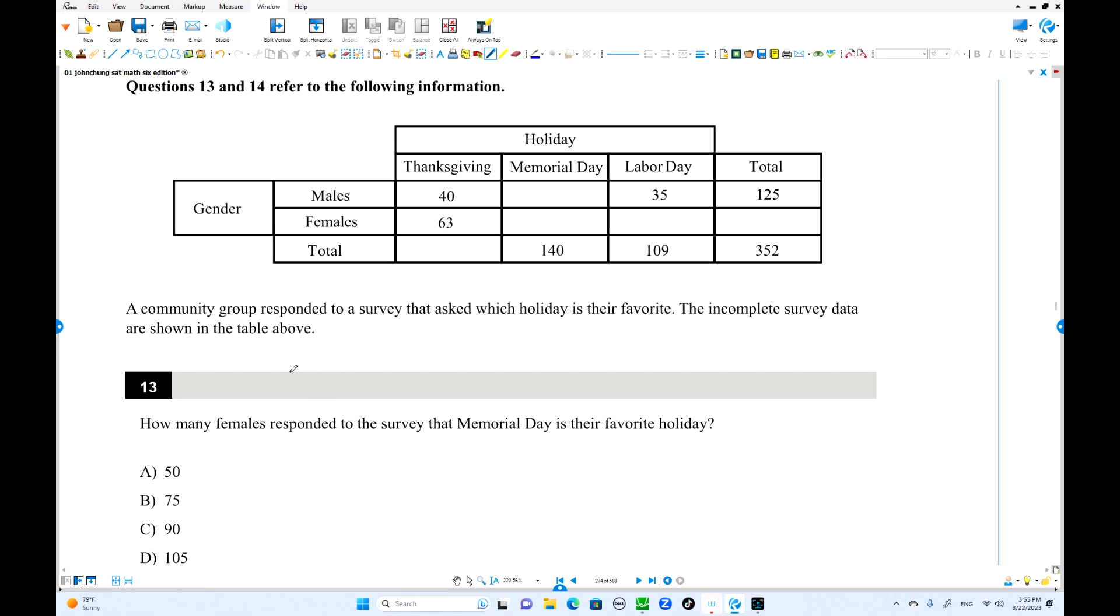Here we go number 13. A community group responded to a survey that asked which holiday is their favorite. Survey data as shown in the table. Using the numbers, it's already filled out. So we're going to find out how many females responded survey memorial day is favorite holiday. Female memorial. These numbers. We're going to find these numbers. This is 125. This is 75. 40 and 35. 125 minus 75 equals 50. This is 50. So from here, 140 minus 50 is 90. That is the female memorial day. Choice B is the answer.